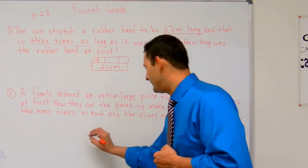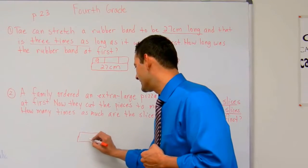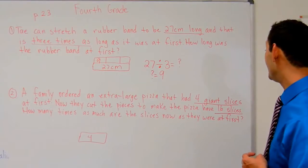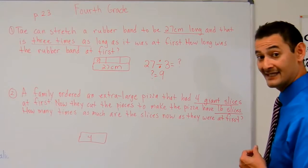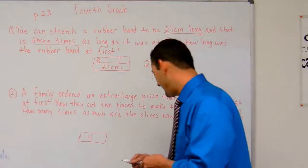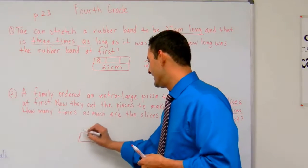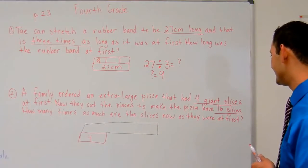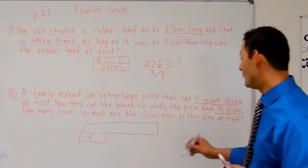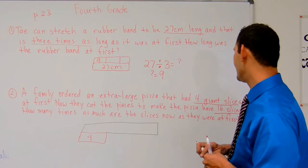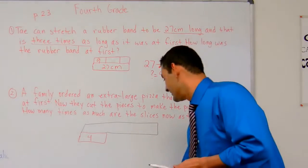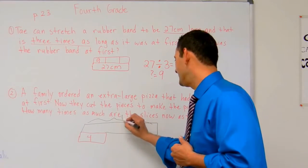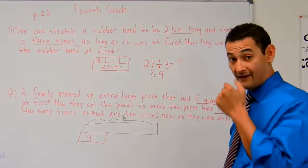Here, the pizza started off with 4 slices. That's 4. Now they cut the pieces to make the pizza have 16 slices. So if the pizza has 16 slices, now the pizza is like that much. It has a lot more slices. What we're trying to figure out is how many times as much are the slices now than they were at first. We know that from here to here, that's going to be 16.